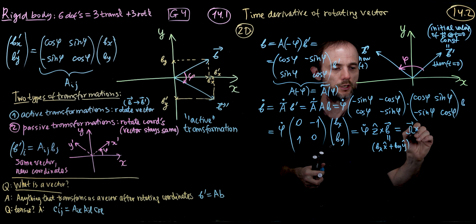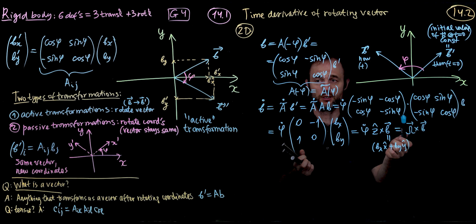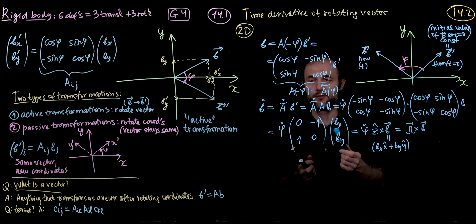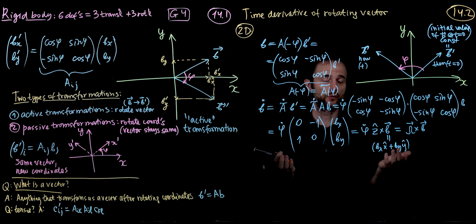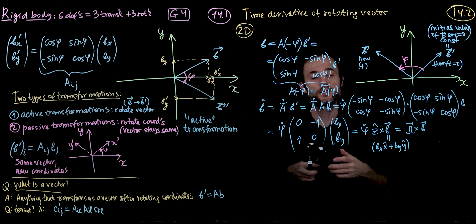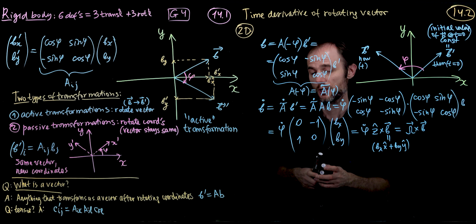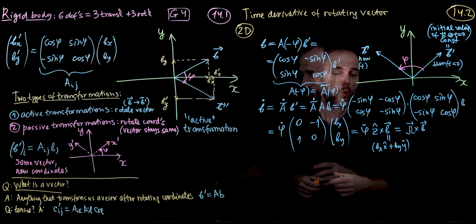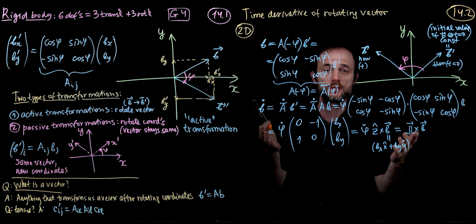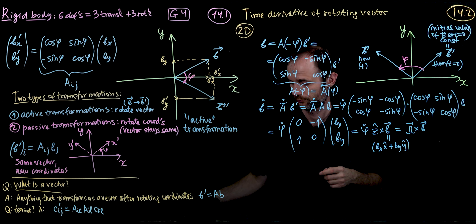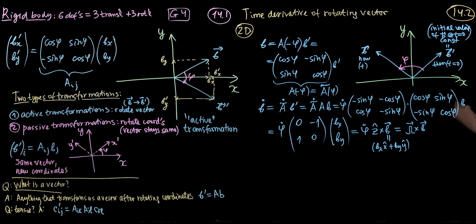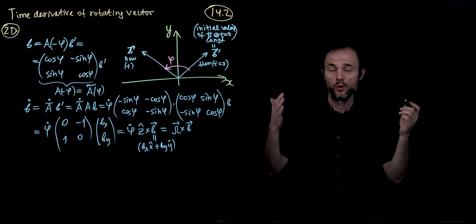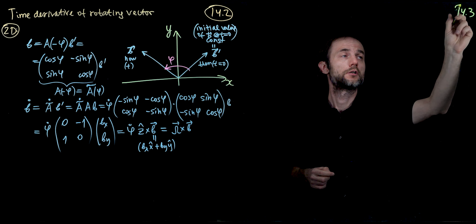Let's perform this matrix multiplication. For the top left: minus sine phi times cosine phi plus cosine phi times sine phi equals zero. For the top right: minus sine squared phi minus cosine squared phi equals minus one. For the bottom left: cosine squared phi plus sine squared phi equals one. For the bottom right: cosine phi times sine phi minus sine phi times cosine phi equals zero. So we get the matrix: 0, -1, 1, 0.